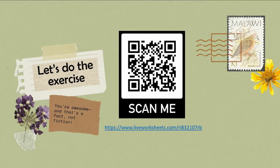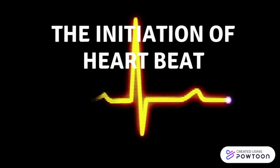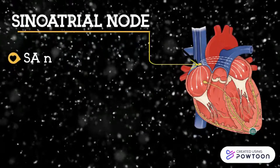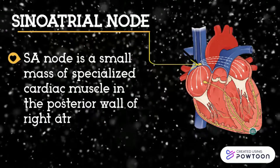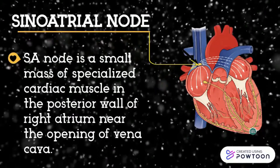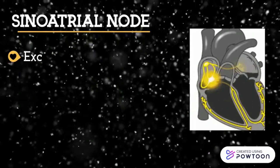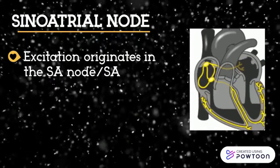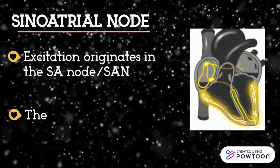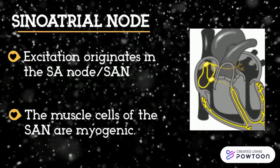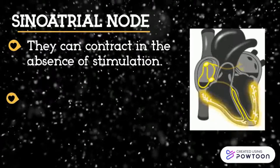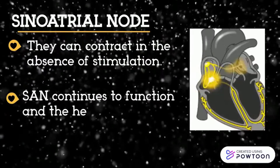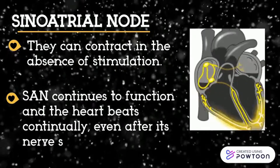The initiation of heartbeat begins at the sinoatrial node. The SA node is a small mass of specialized cardiac muscle in the posterior wall of the right atrium, near the opening of the vena cava. The muscle cells of the SA node are myogenic — they can contract in the absence of stimulation. The SA node continues to function and the heart beats continually even after its nerve supply has been cut.